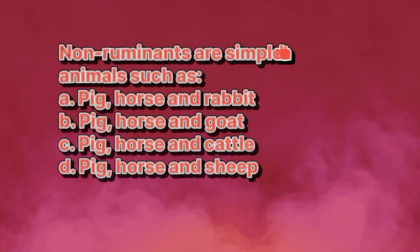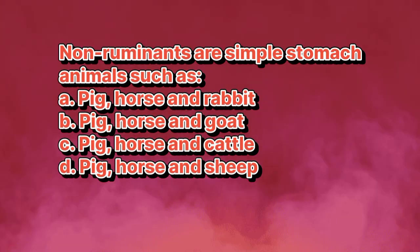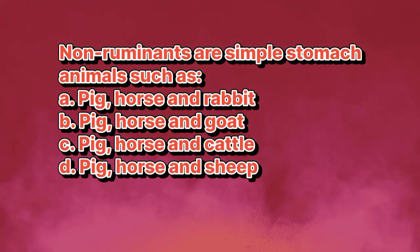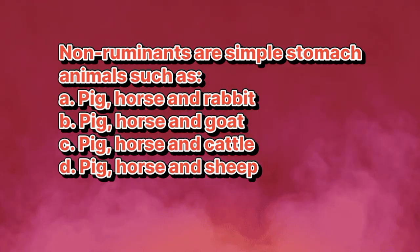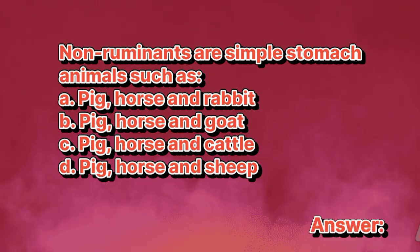Non-ruminants are simple stomach animals such as: A. Pig, horse, and rabbit. B. Pig, horse, and goat. C. Pig, horse, and cattle. D. Pig, horse, and sheep. The answer is letter A.